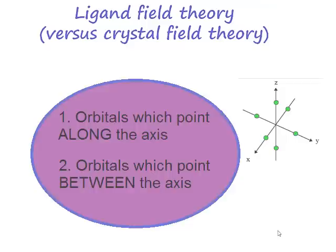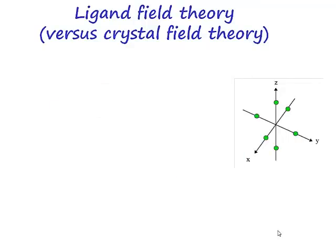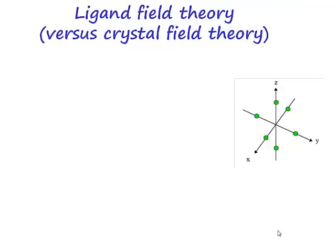So here I've drawn an example of the dz squared orbital. The dz squared orbital points along the z-axis. What's the d-orbital that points along the x and y-axis? The x squared minus y squared. So dz squared and the dx squared minus y squared are orbitals that point along the axes.